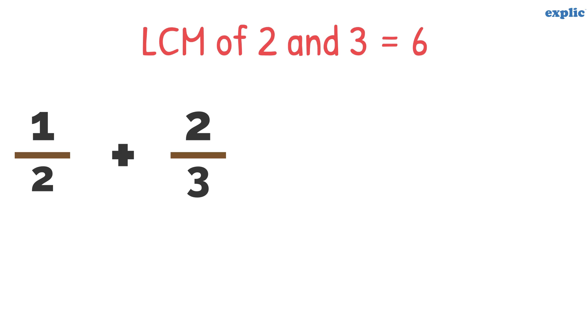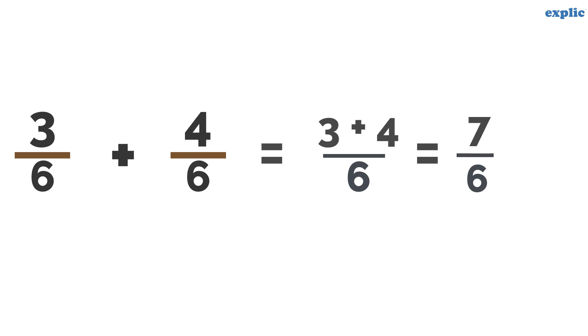Multiply numerator and denominator by the same number to change denominator 2 into 6. Do the same activity for the second fraction as well. Now it can be added easily using the like fraction rule.